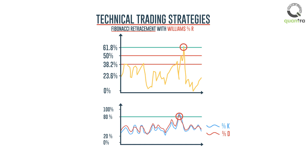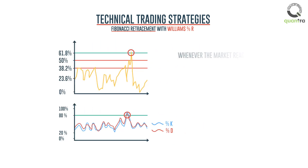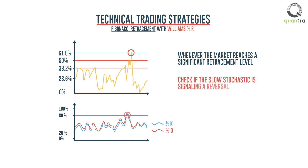Similarly, we may check for other Fibonacci ratios and find the corresponding support level. In essence, whenever the market reaches a significant retracement level, we will check if the slow stochastic is signaling a reversal. If it does, then we confirm the signal and trade with it.